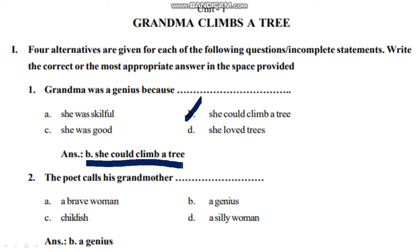Next question: The poet calls his grandmother — Option A: a brave woman, Option B: a genius, Option C: childish, Option D: a silly woman. The right answer is Option B — genius. The author called the grandmother a genius.